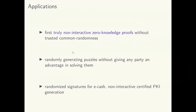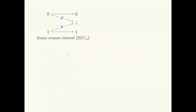The setting is non-interactive and does not use any setup. Furthermore, many cryptographic tasks can be captured as secure computation of sender-receiver functionalities, making the model appealing from a practical point of view. Prior work has noted that ZK proofs using OWSC constitute the first truly non-interactive ZK proof — it does not need a common randomness setup and guarantees desirable properties like non-transferability and deniability. Another application is the generation of random puzzles where no party gets any advantage in solving them. OWSC also helps in constructing randomized blind signatures, which have applications in e-cash and non-interactive certified PKI generation.